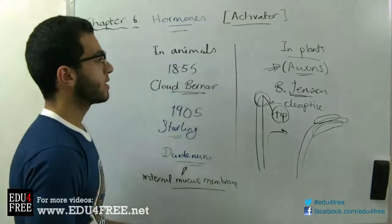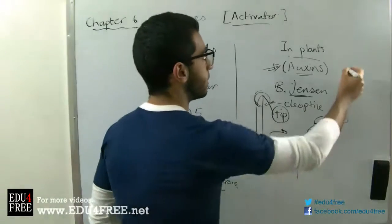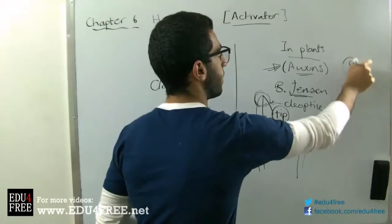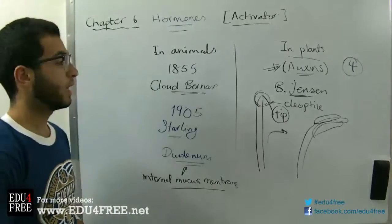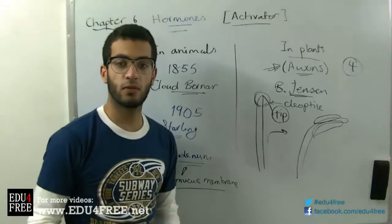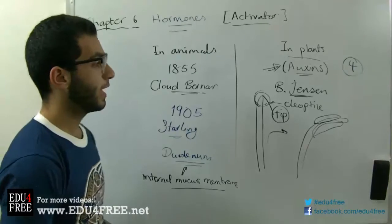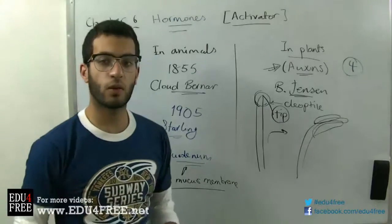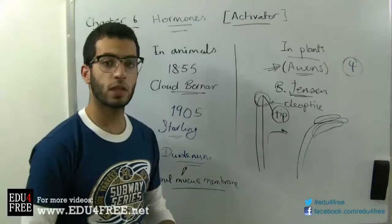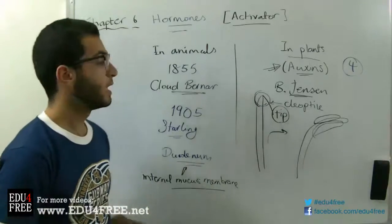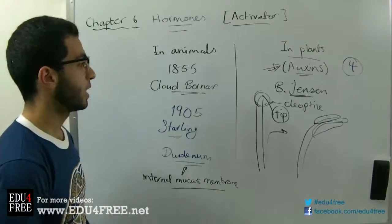We can summarize the functions of auxins in four points. First, they regulate plant growth. Second, they organize the development of tissues. Third, they help with flower formation, leaf fall, and ripening of fruits. And finally, they affect the function of all tissues in the plant.